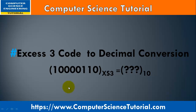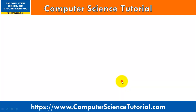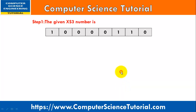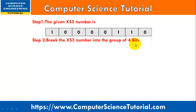Now we will learn how to convert XS3 code into a decimal number. I have taken 100000110 as an XS3 number and we have to convert it into the decimal number.